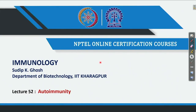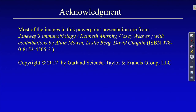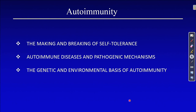Welcome everybody. We are continuing autoimmunity, and today in this lecture we are going to talk about the second part. At the beginning we said that in autoimmunity we divided into three different parts, and in this part we are going to talk about autoimmune disease and pathogenic mechanism. We already discussed the making and breaking of self-tolerance—that was a summary of what we knew before, with some new information like AIRE.